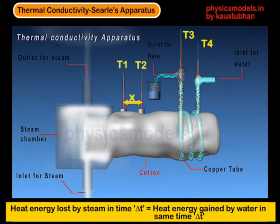To find the mass of the water, one could initially measure the empty beaker, and then measure the beaker with water after a time duration, and that difference will give you the mass of water which flowed.